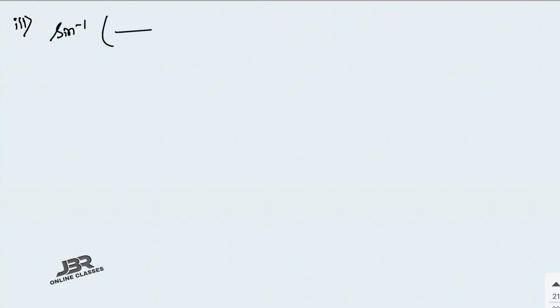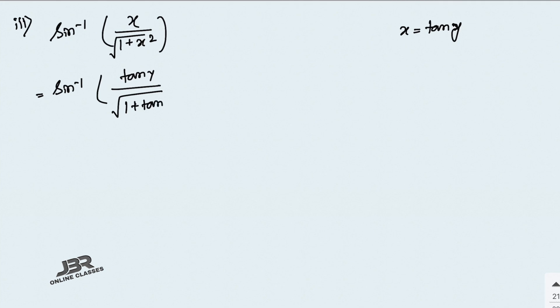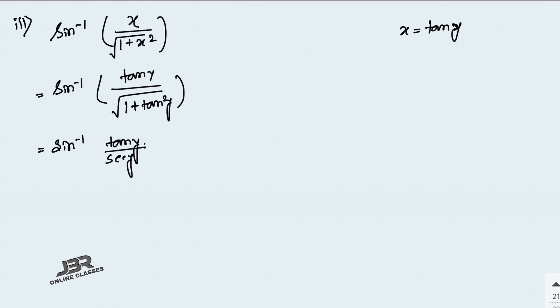Sum number 3: sin inverse of x divided by root of (1 plus x²). Let x equal tan y. Then write sin inverse of tan y divided by root of (1 plus tan²y). Now 1 plus tan²y equals sec²y, and the root of sec²y is sec y.